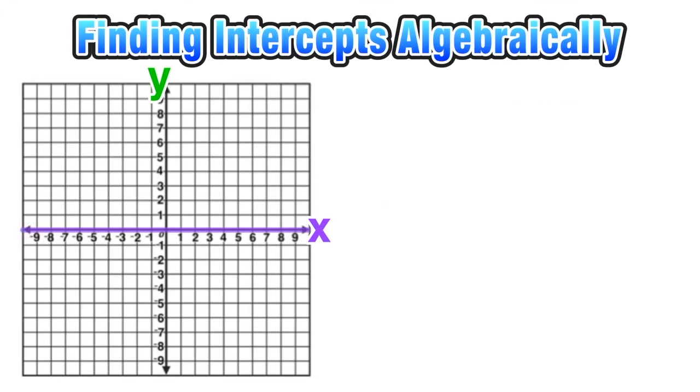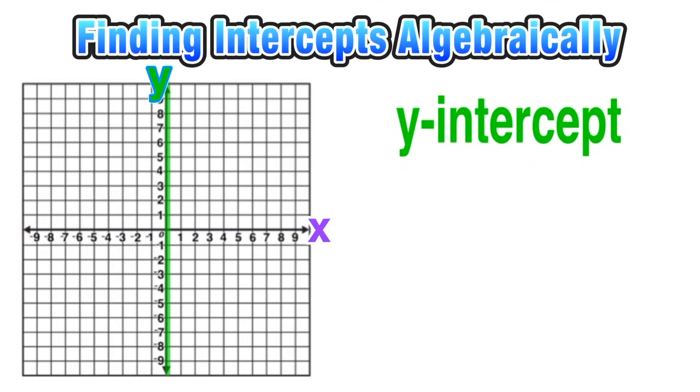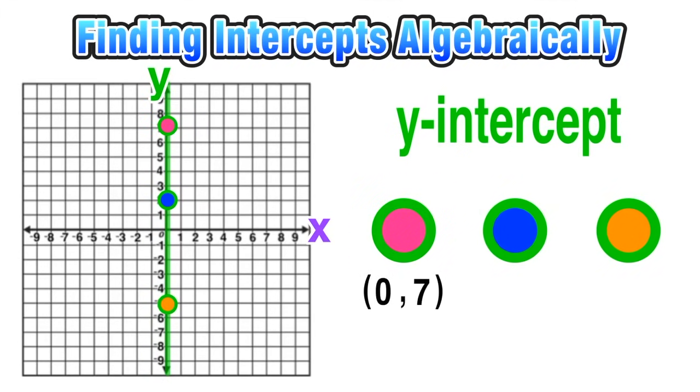Now let's take a look at a y-intercept. This is the vertical y-axis here. Again, we'll look at three different points on the y-axis. We have the first point, our pink point, which is at (0, 7). Our blue point has coordinates (0, 2), and our orange point has coordinates (0, -5).